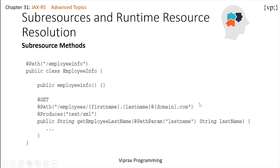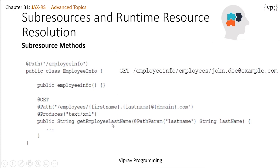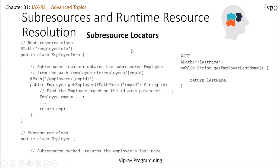Sub-resource methods handle the HTTP request directly. This sub-resource method, getEmployeeLastName, gets the last name of an employee — in this example, the last name would be 'Doe'. There are also sub-resource locators: the getEmployee method is the sub-resource locator that provides the employee object, checking for an employee with a specific ID. It finds the employee and returns it, and then you can use that employee in your sub-resource method to return the employee's last name.